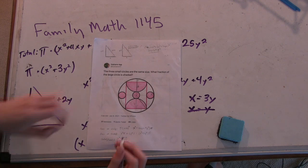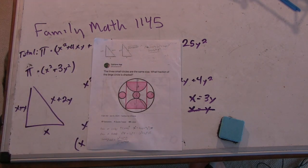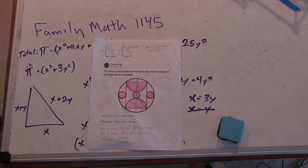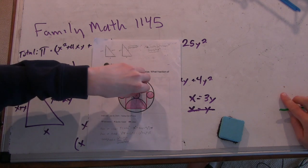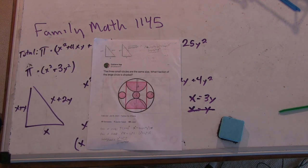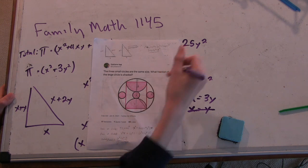And then since our large shaded circle has radius x, it has area 9y squared. And then we add 1y squared for each small circle, so we get a total of 12y squared.